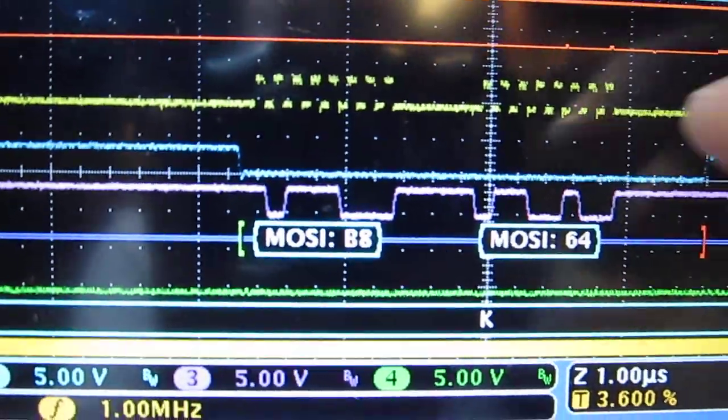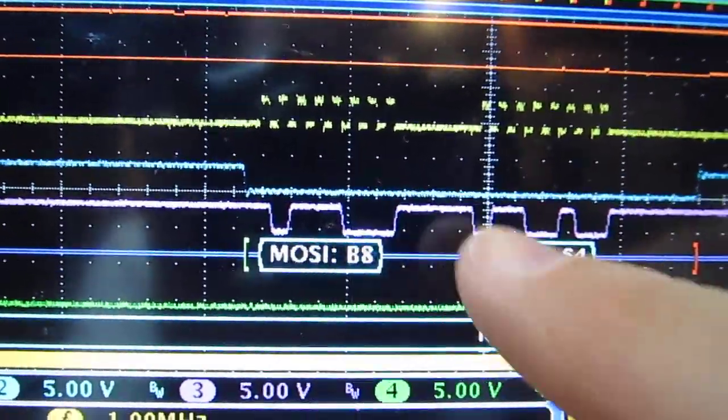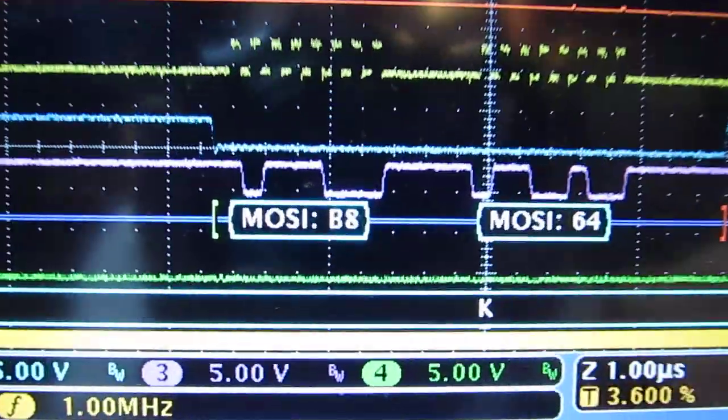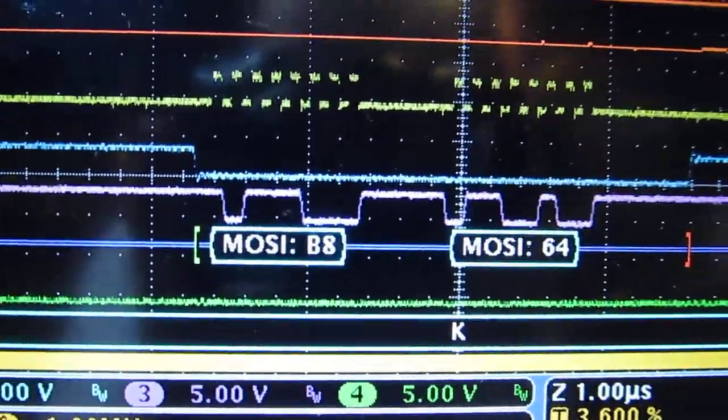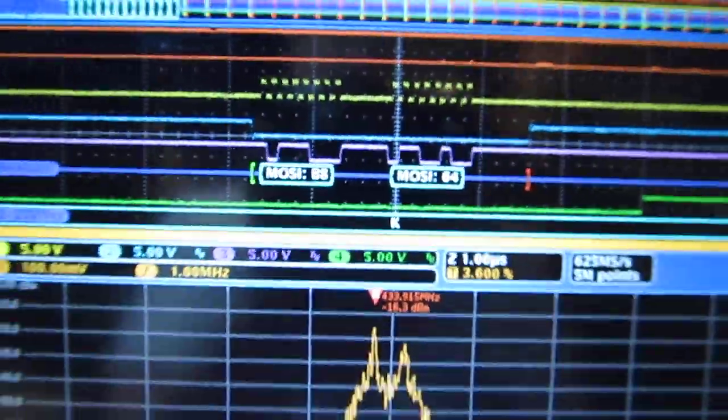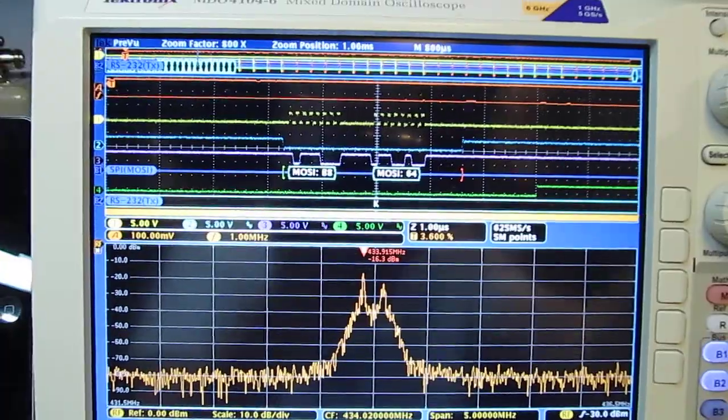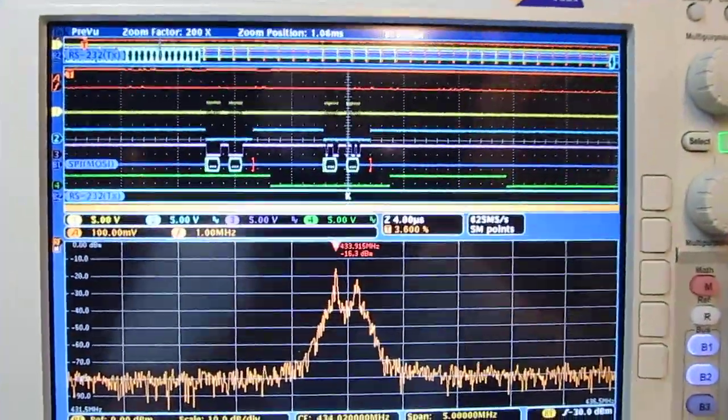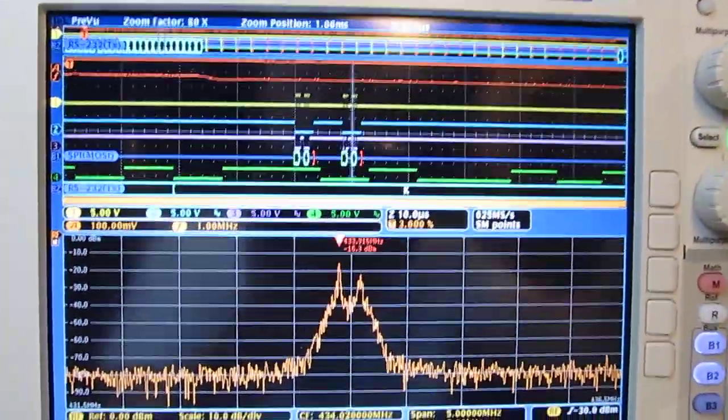So clock, slave select, and master out slave in. And then I can actually see the data that's being sent there. So just a neat little look at multiple domains by being able to capture all these signals at the same time and look at the timing relationship of all of them.